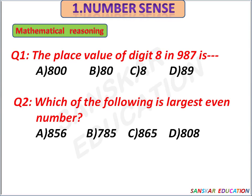The place value of digit 8 in 987 is dash. Options are 800, 80, 8, 89. The place value of digit 8 in 987 is 80. B is the correct answer.